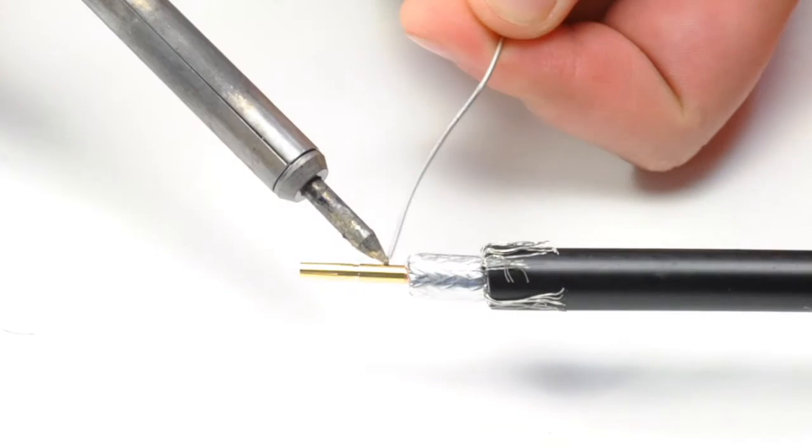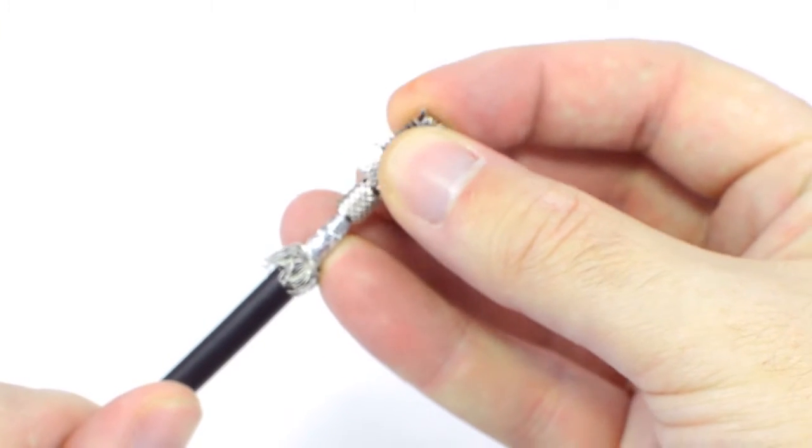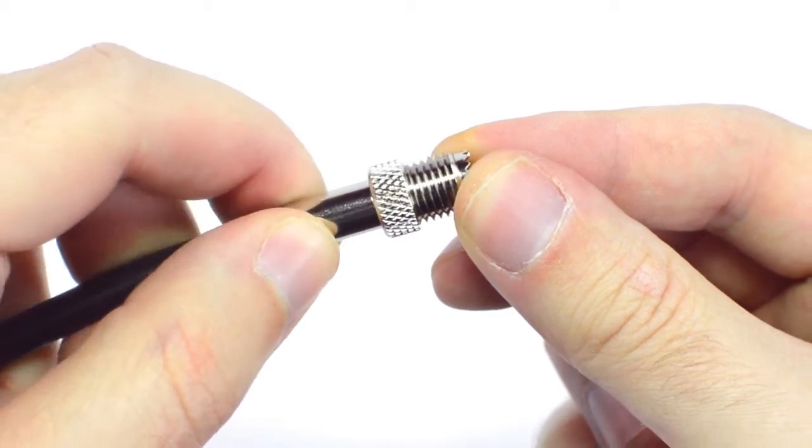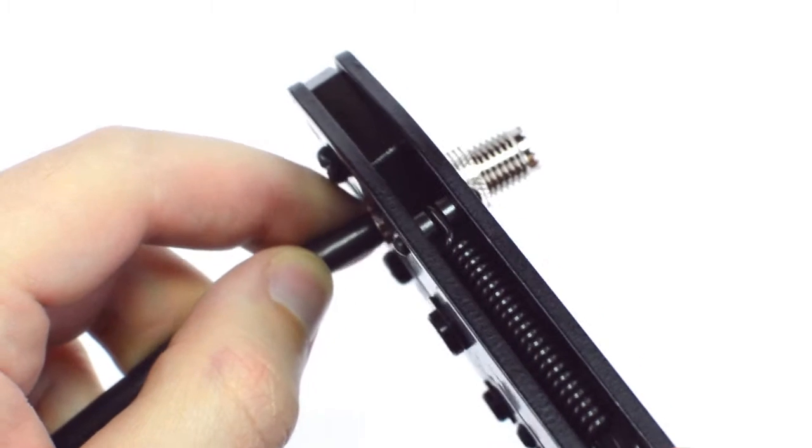Solder the pin onto the center conductor and insert the connector housing over the cable. Then, slide up the ferrule to the base of the connector, folding the shield with it. Crimp the ferrule onto the outer jacket to complete termination.